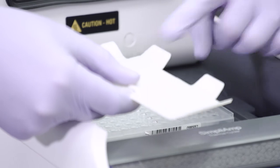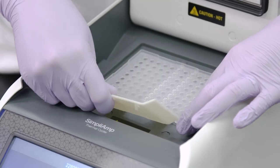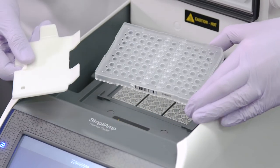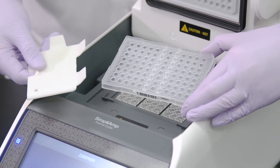Alternatively, you can insert the two-prong side of the multi-removal tool into the long side of the PCR plate and lift to remove the plate from the sample block.